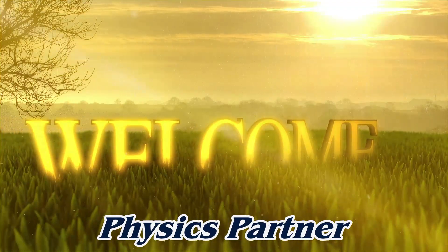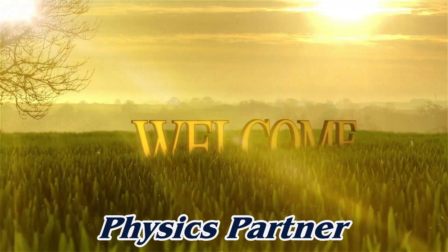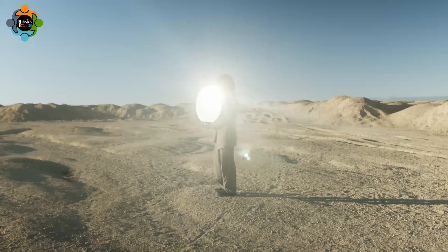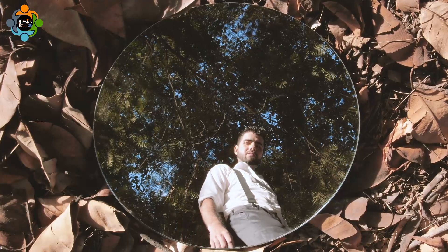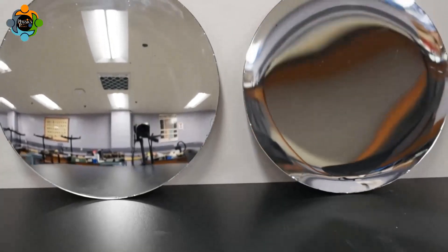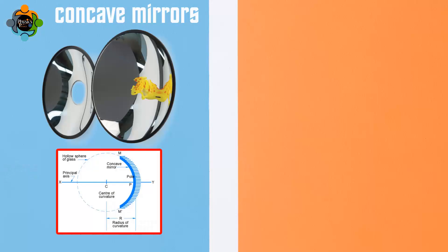Hello and welcome back to another episode of Physics Partner. Mirrors are reflective surfaces that bounce light, creating an image of an object placed in front of them. There are two main types of spherical mirrors we commonly encounter: concave mirrors and convex mirrors.